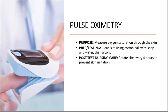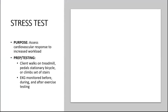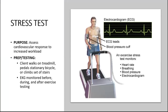The pulse oximeter measures oxygen saturation through the skin. Clean the site using a cotton ball with soap and water, then use alcohol and dry the skin. For patients on continuous monitoring, rotate the site every four hours to prevent skin irritation. The stress test assesses cardiovascular response to increased workload — the client walks on a treadmill, uses a stationary bike, or climbs stairs while hooked up to ECG leads, with the EKG monitored before, during, and after exercise testing.